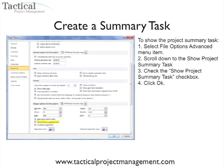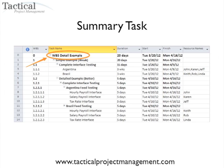To access that, you just go through the File Options menu, scroll down to the Advanced section, and click on the checkbox that says Show Project Summary Task. It'll instantly create a summary level in your project schedule. Previously, people would have to insert a task and indent all the tasks one level in, but this way you can create the summary task automatically when you start building your project schedule.